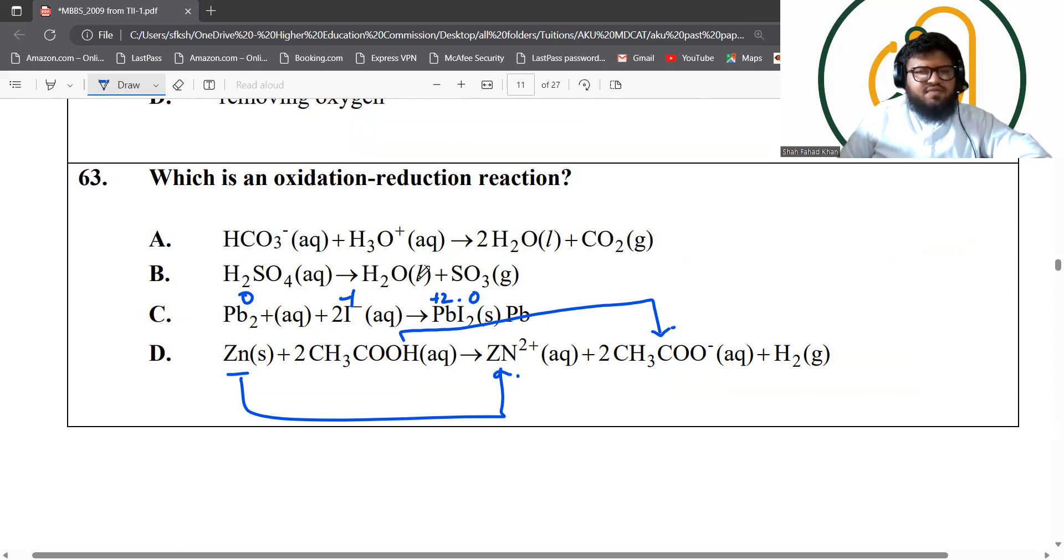Lead is going from zero to plus two and this one is going from negative one to zero. So you have this one seems to be an oxidation reduction reaction. Sulfuric acid, hydrogen, no change. Sulfur, essentially no change. Carbon, no change. So option C seems to be the best answer here. Zinc gets oxidized here. Gives away its electrons.